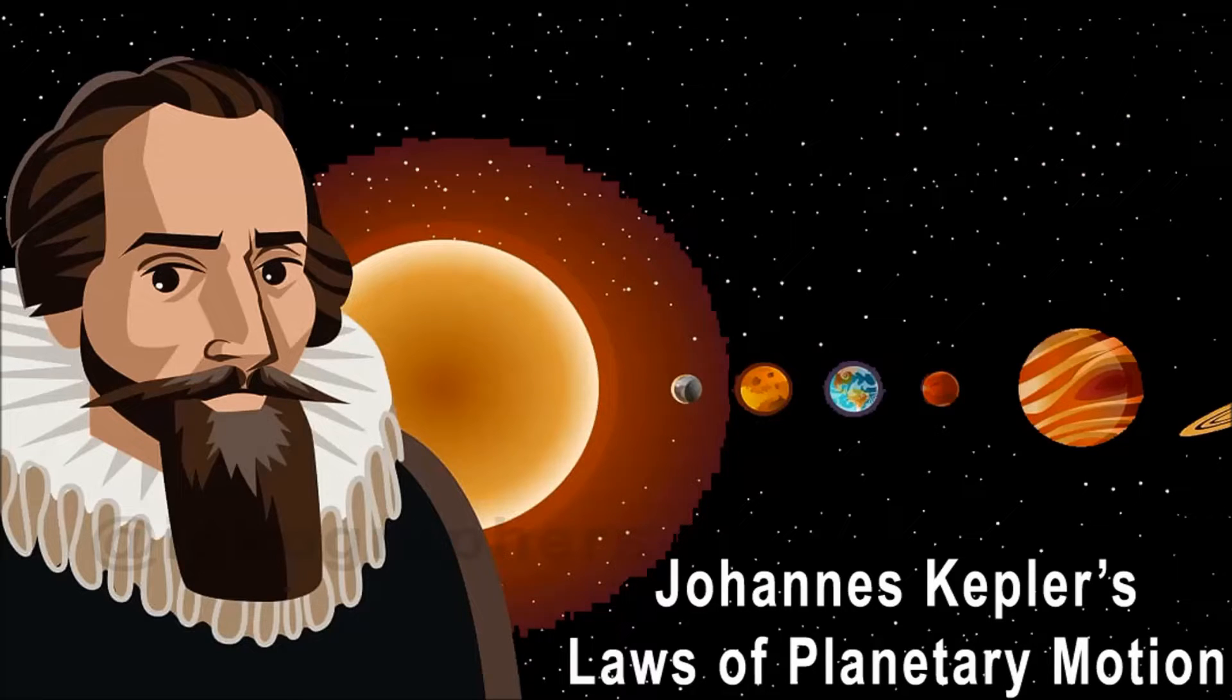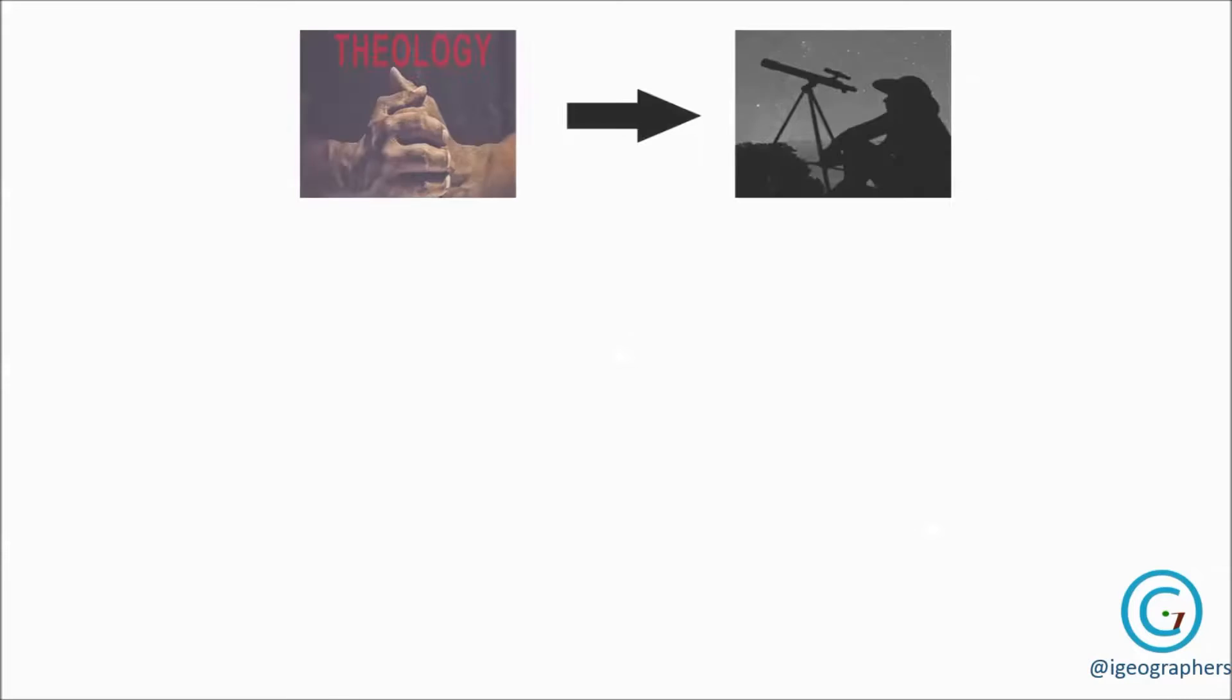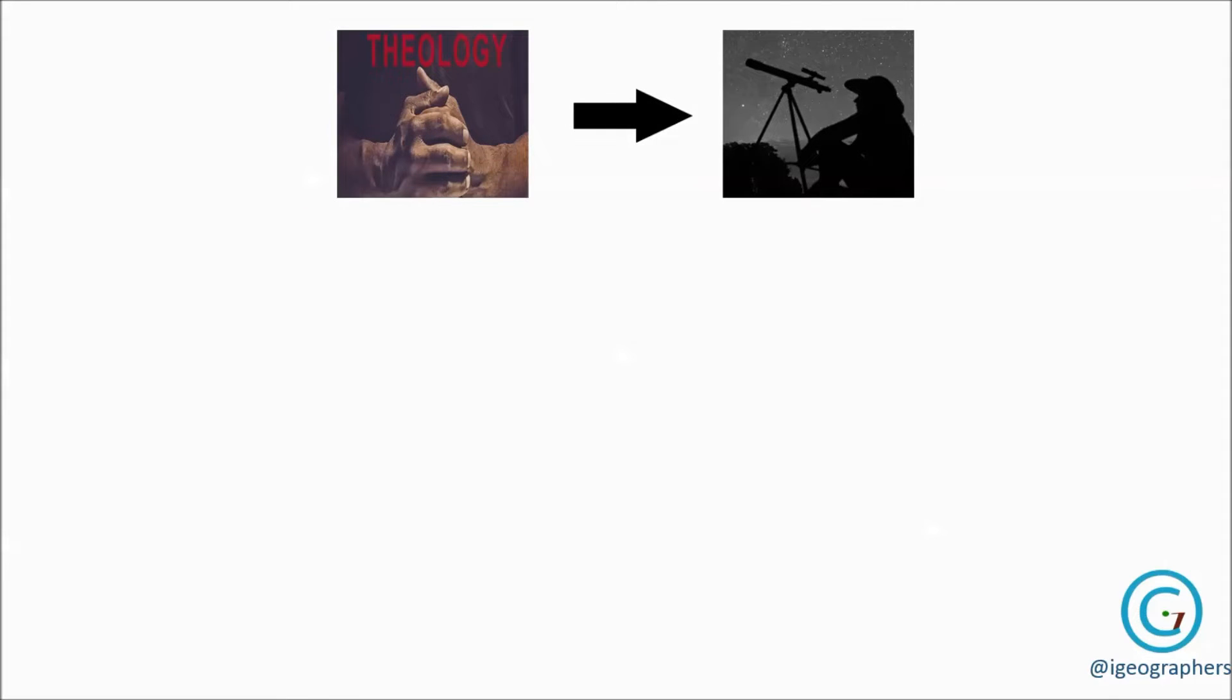Johannes Kepler was born in the year 1571. Since childhood he wanted to become a theologian, but later he shifted his interest from theology to astronomy and struggled long to figure out why Mars appeared periodically to walk backward across the night sky.